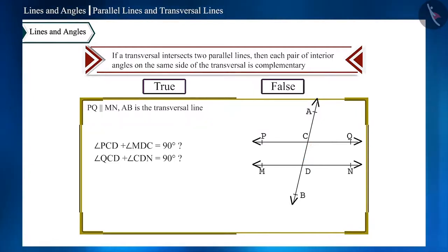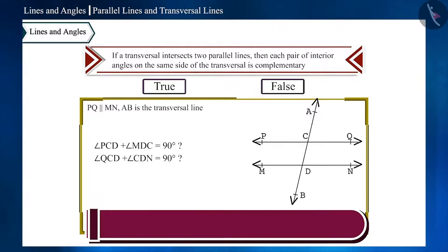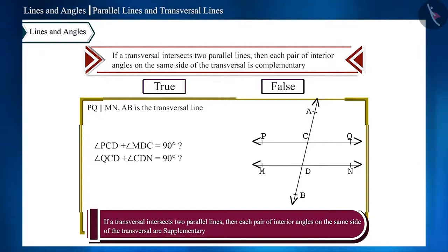And to prove this we can use this theorem: if a transversal intersects two parallel lines, then each pair of interior angles on the same side of the transversal are supplementary. That is, the sum of these two angles is not 90 degrees but 180 degrees.